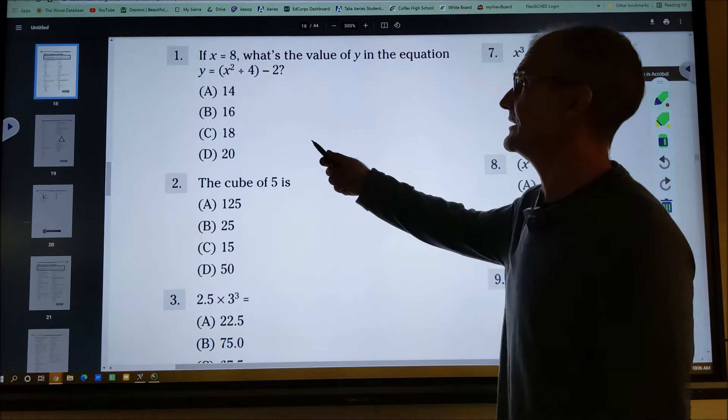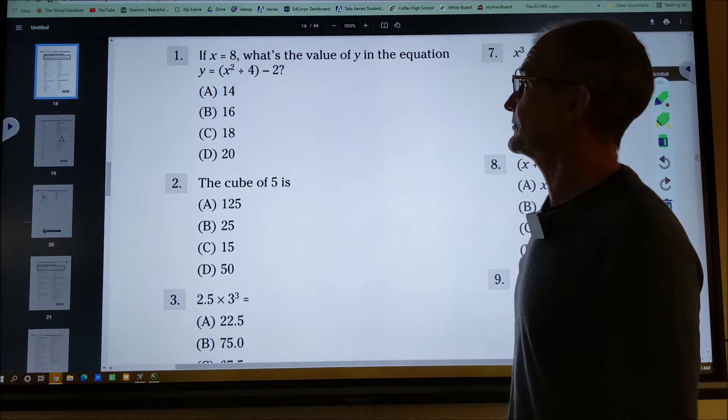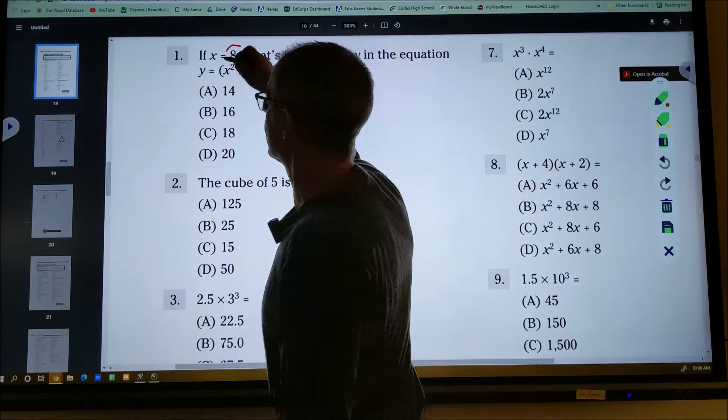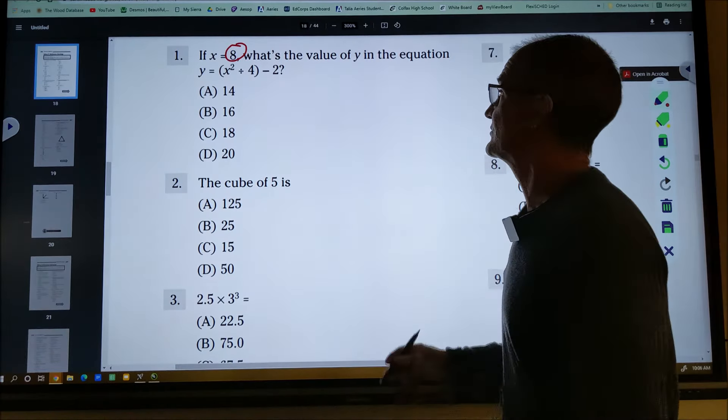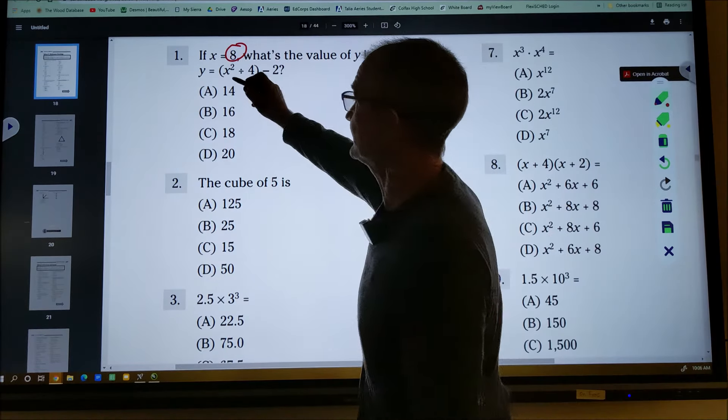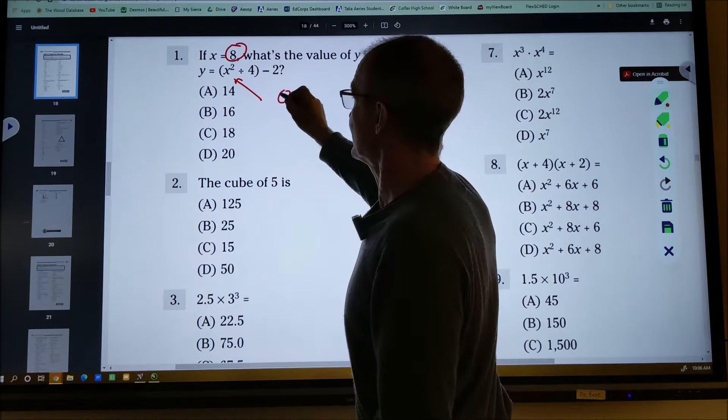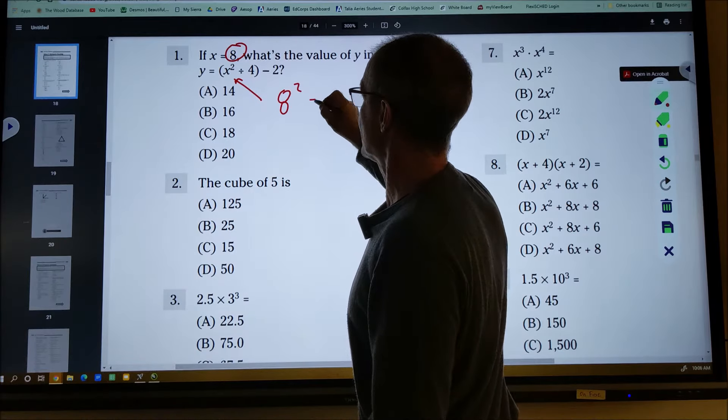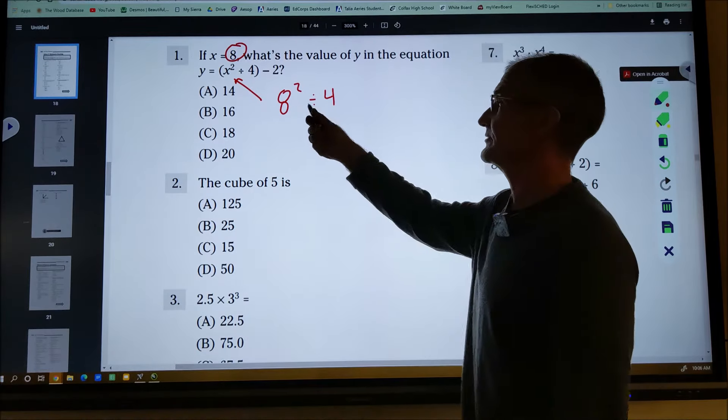Number one, this problem right here is really about order of operations. It's giving you a value of X. X is equal to eight. You got to take that value and plug it in there. So that means you're going to have eight squared divided by four.